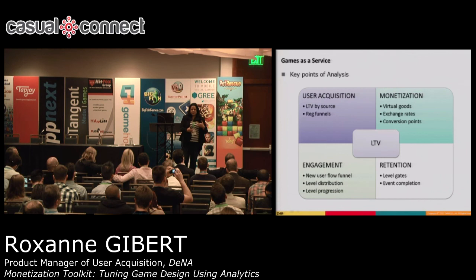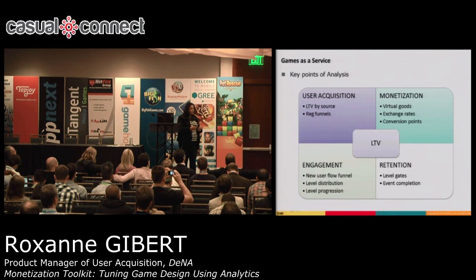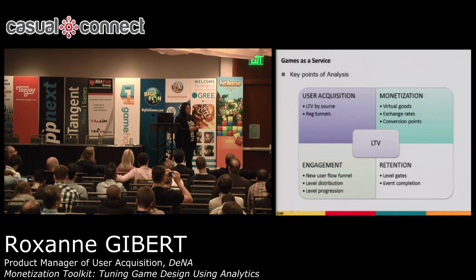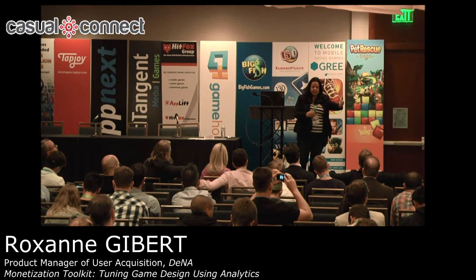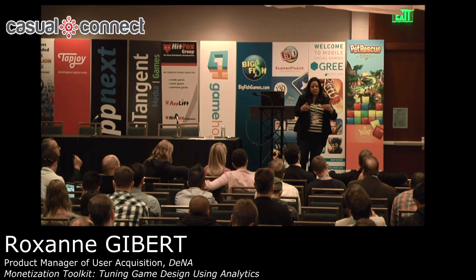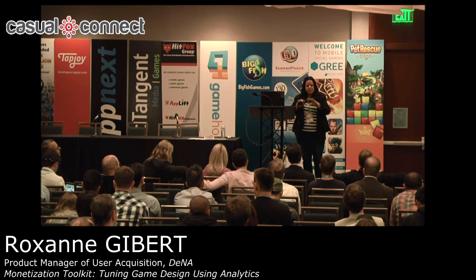Level progression — look at how your users are progressing across all the levels. You'll be putting in level gates, which is a point where you say: if you want more free content, you're either going to have to pay or invite some friends or perform some viral or monetization action. Taking a look at where you put those gates and how you let people engage with your free content is something you really want to be optimizing. Event completion is more than just your tutorial — it could be a delayed achievement event where completing a quest gets users a reward in the next seven days. Take a look at how people are engaging with your different events and promotions.